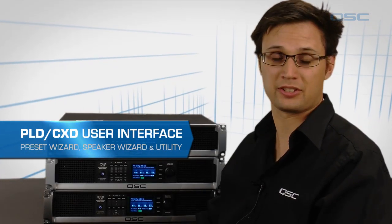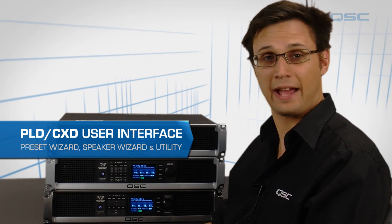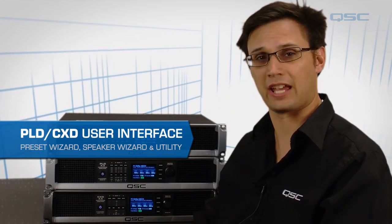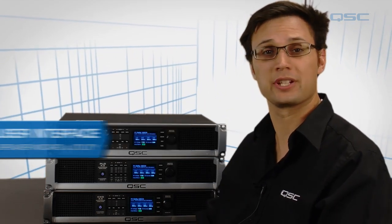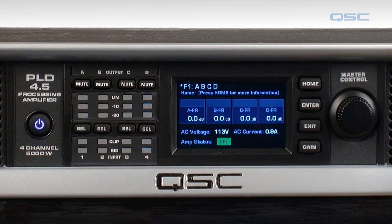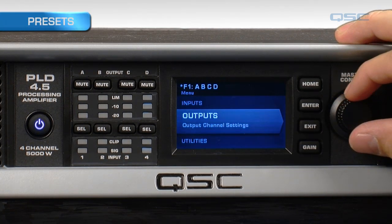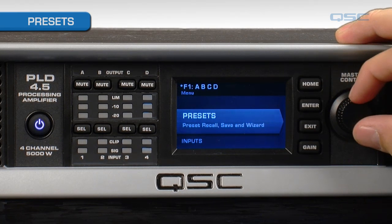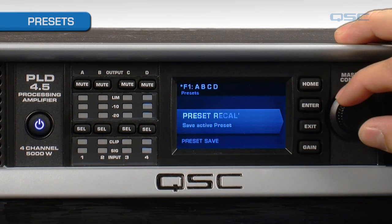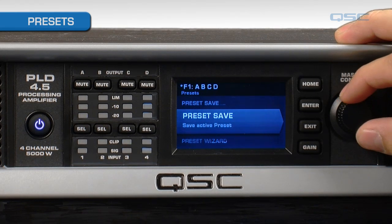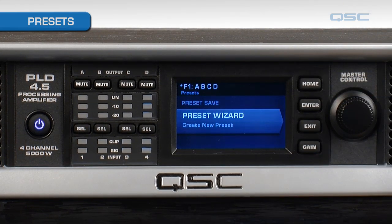Now that we've seen the signal processing for your inputs and outputs, let's take a look at how to configure the amplifier with the presets section. The amplifier is driven by its presets, as all the DSP and channel configuration can be changed by simply recalling different presets. You have a preset recall, a preset save, the preset wizard, and a speaker wizard in the previous options.